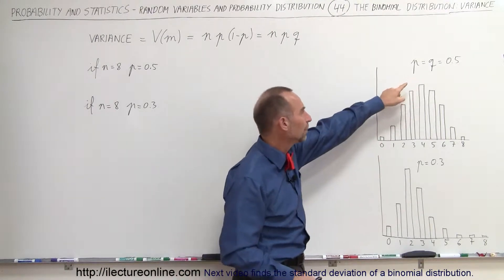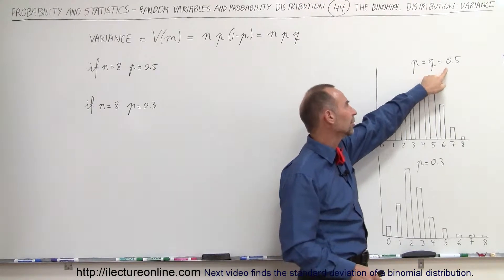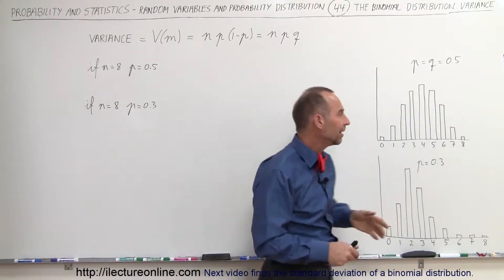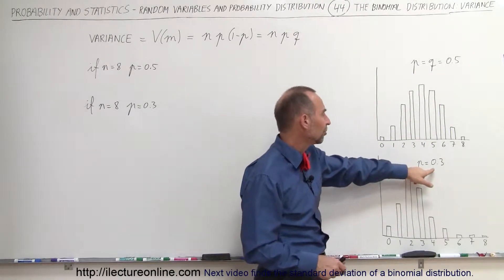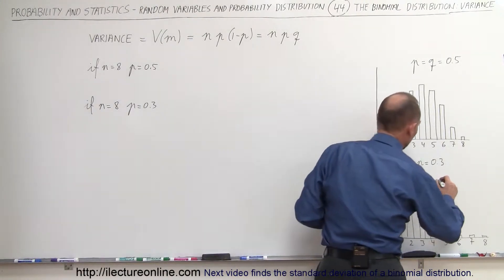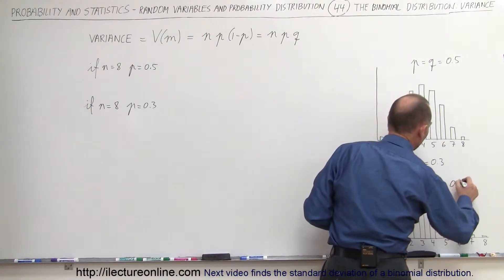In the first case, the probability of success is equal to the probability of failure, which is equal to 0.5. In the second case, the probability of success is 0.3, which means the probability of failure Q would be equal to 0.7.